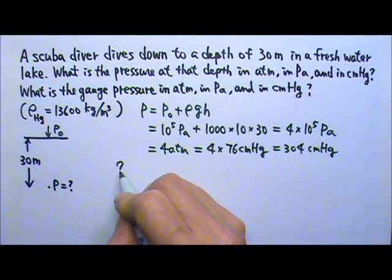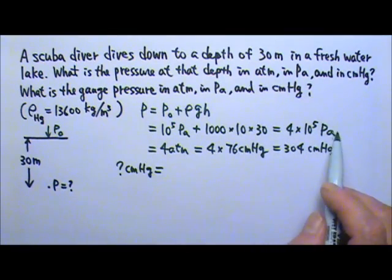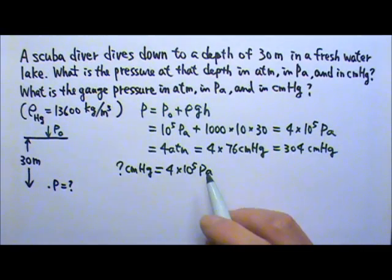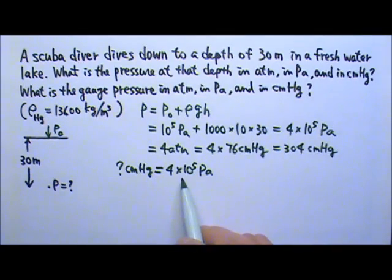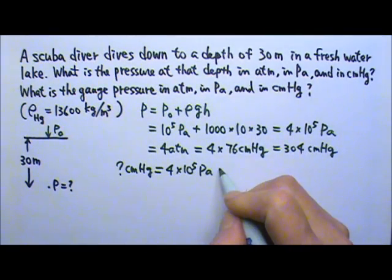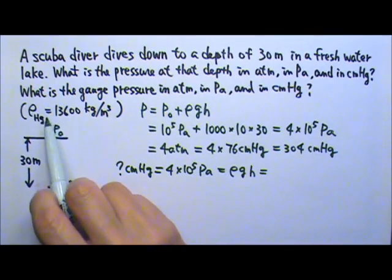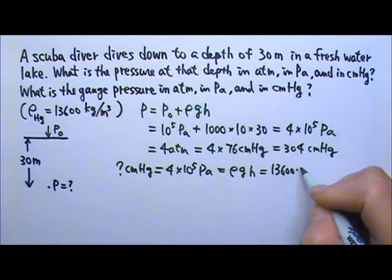We want to know how many centimeters of mercury equals 4 times 10⁵ pascals, which means we want to find the height of a mercury column that can produce this much pressure. The pressure produced by a column of liquid mercury can be found using our formula ρgh. Because we're looking at the column of mercury, we have to use mercury's density, 13,600, and I'm just going to use 10 for g.